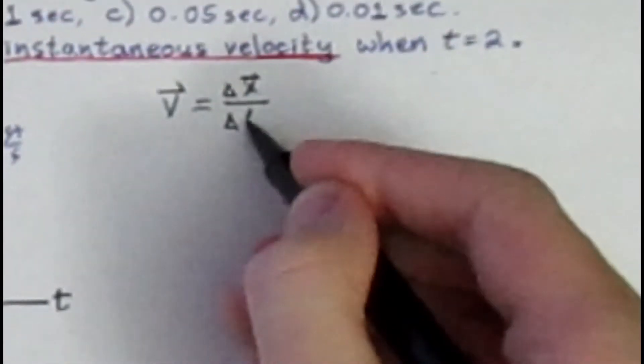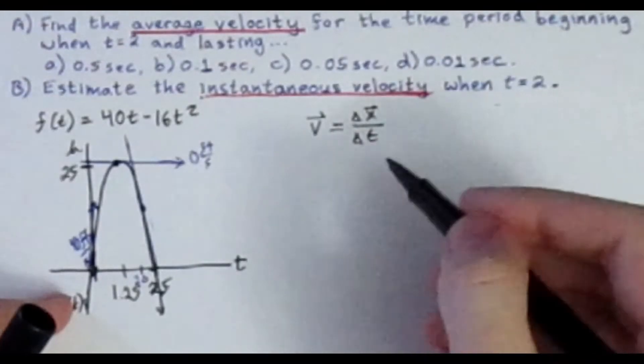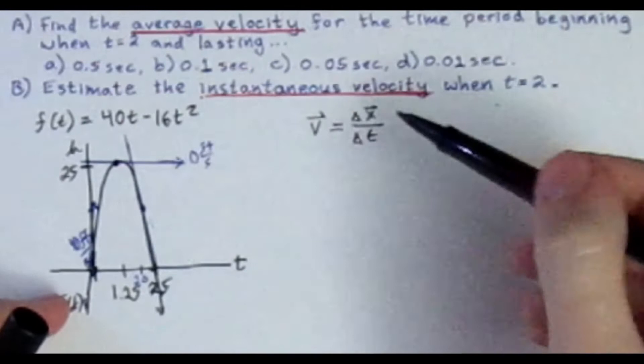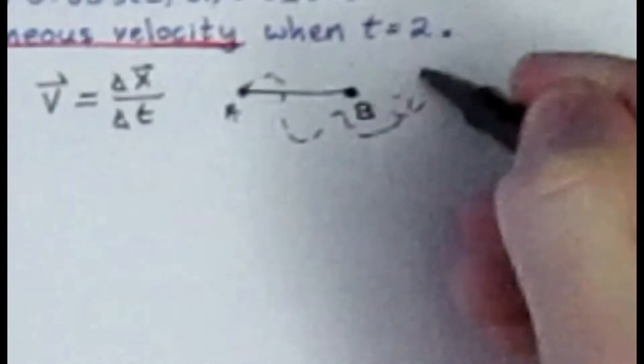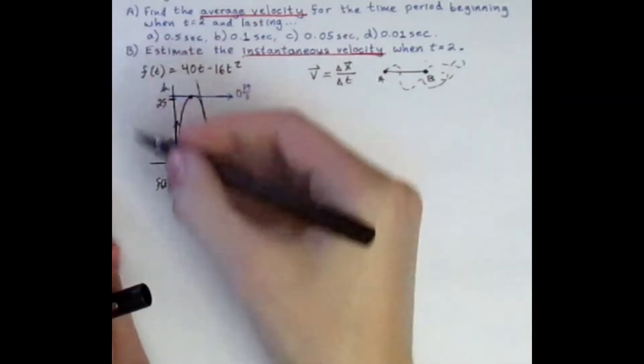Let's define what velocity is. Velocity is displacement over time elapsed. Displacement is denoted as delta x over delta t, from what time to what time. Displacement is the distance from where you started to where you ended up, regardless of the actual path you took to get there.